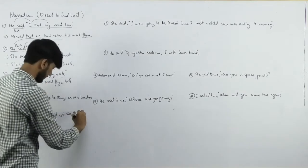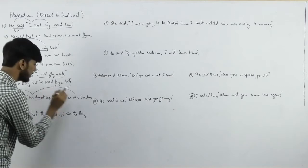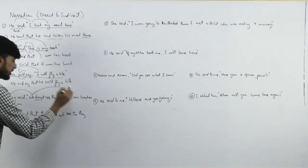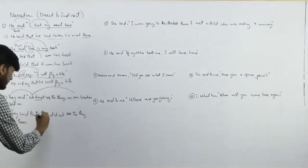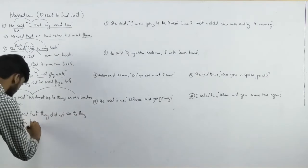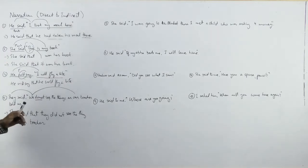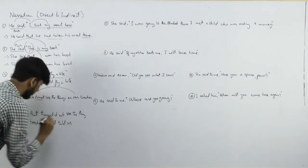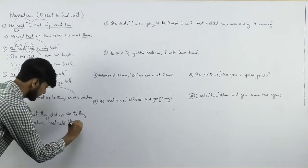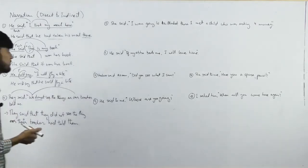They said that they did not see the things as their teacher had told them. 'Our teacher told us' was past indefinite, so it changes to past perfect: 'their teacher had told them.' In this sentence, pronouns changed, tense changed, and words like 'our' changed to 'their' and 'us' to 'them.'